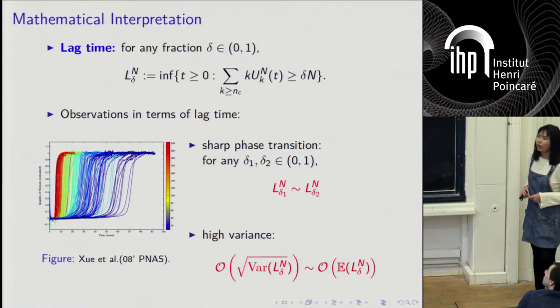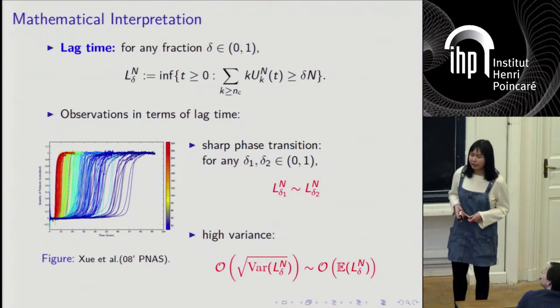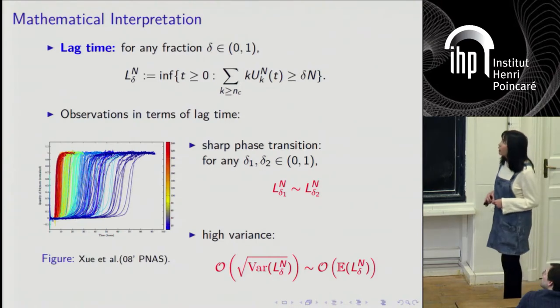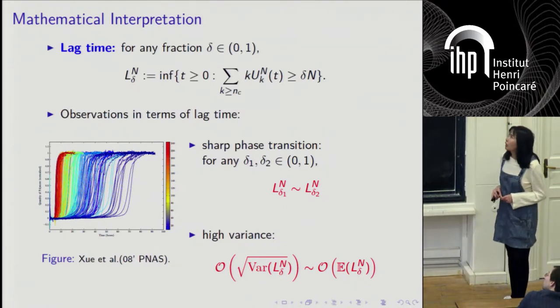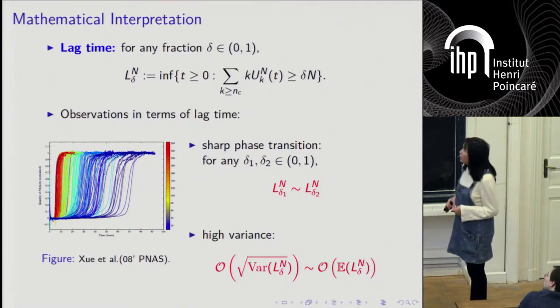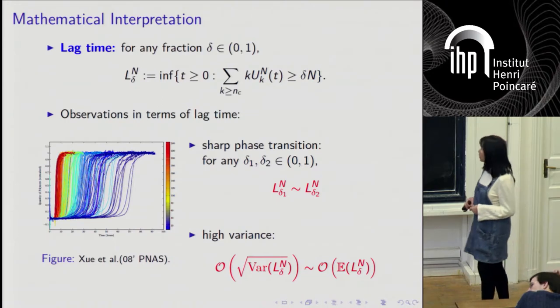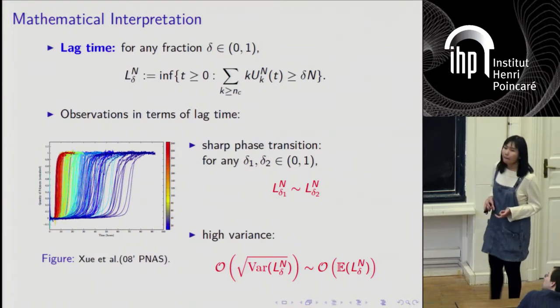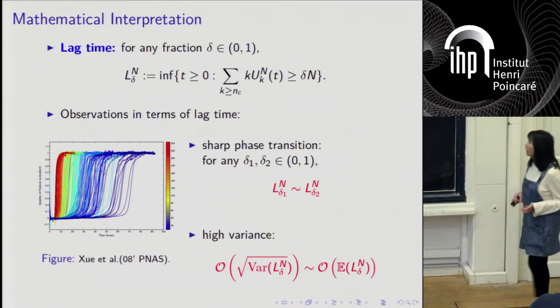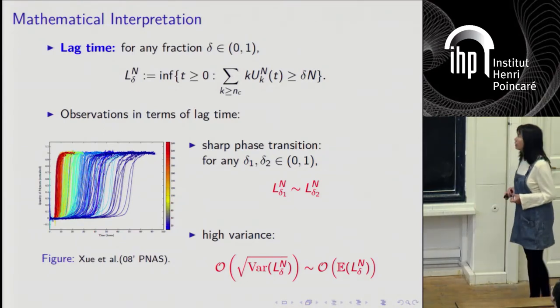Under these settings, we can write our observations in mathematical language. We are interested in the lifetime of this process. L_delta is the time when the stable mass becomes greater than some fraction. The picture means that no matter what delta is, the lifetimes are closer to each other in some sense. The higher variance means that the fluctuation of the lifetime is in the same magnitude of the mean value. This fluctuation is much larger than what we can see from the central limit theorem.